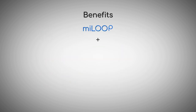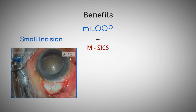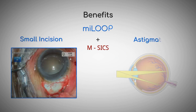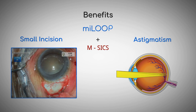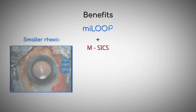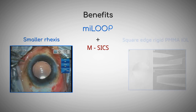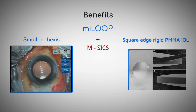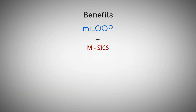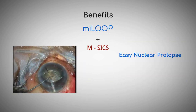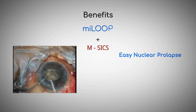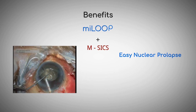In conclusion, the benefits of My Loop use in MSICS include: smaller sclerocorneal incisions which will reduce post-operative astigmatism; smaller rhexis creation in combination with a square edge PMMA IOL with an overlapping rhexis, which reduces the incidence of post-operative posterior capsular opacification; and easier nucleus prolapse which reduces the risk of posterior capsular tears.